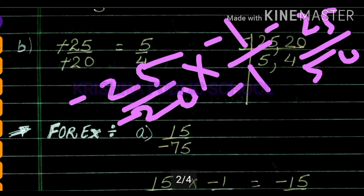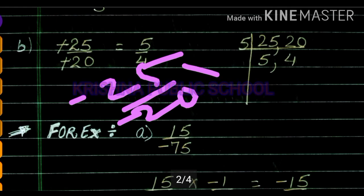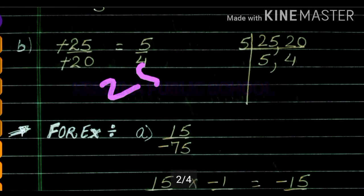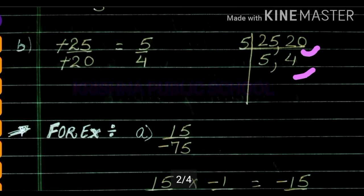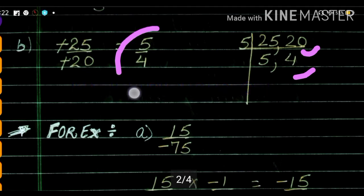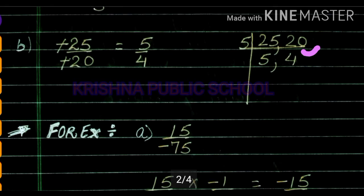Now we find the standard form of 25 upon 20 using the second method — LCM. We find: 5 into 5 gives 25, and 5 into 4 gives 20. So the common factor is 5, and the standard form is 5 upon 4. We also ensure that the denominator is positive.